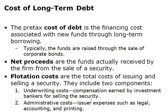Let's look at the long-term cost of debt. The pre-tax cost of debt is the financing cost associated with new funds raised through long-term borrowing—basically when a company issues a bond sold through the financial markets. When selling a bond, you go through an investment banker who takes a flotation cost. The two main components of flotation costs are underwriting costs—compensation for the investment bankers selling the security—and administrative costs, covering legal, accounting, and printing expenses.